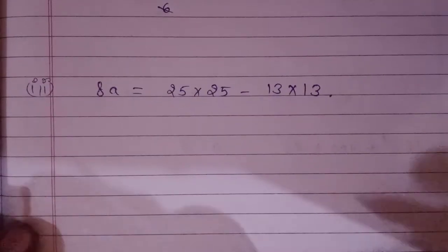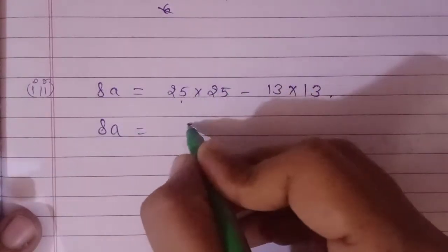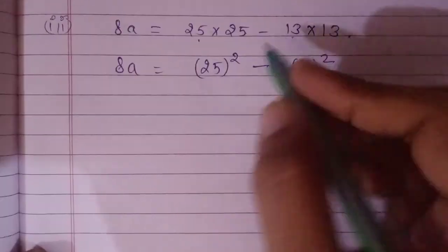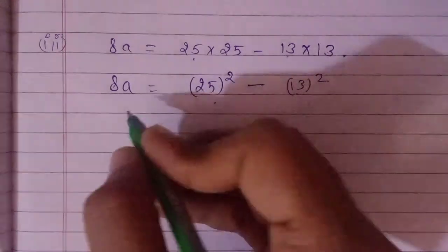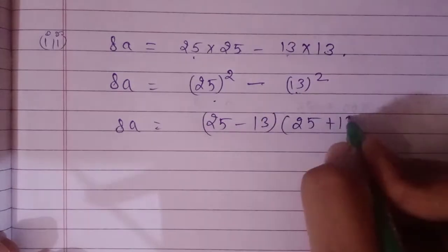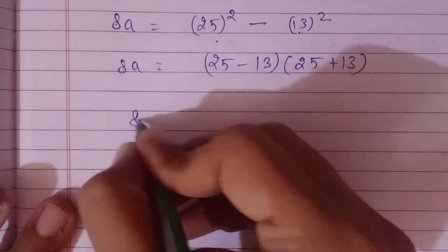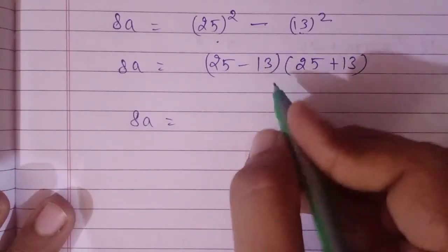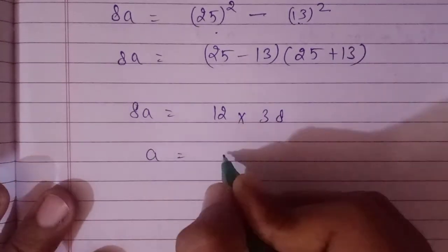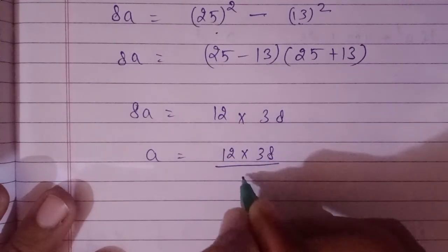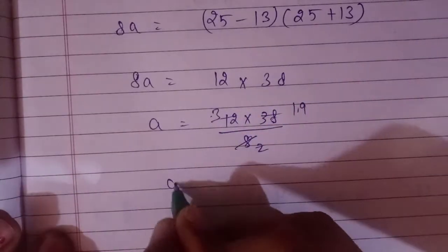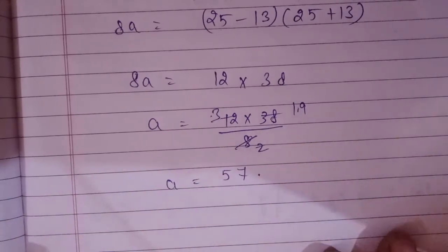Next question 8a: 25×25 = 25² and 13×13 = 13². Again a²-b² = (a-b)(a+b). So 8a = (25-13)(25+13) = 12×38. Value of a = 12×38 / 8. After calculating: 12×38 = 456, divided by 8 gives 57. So the value of a is 57.